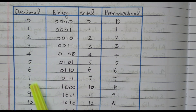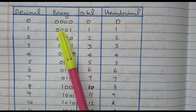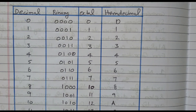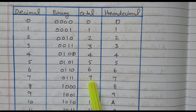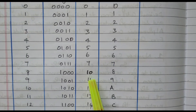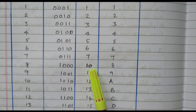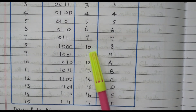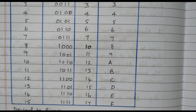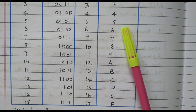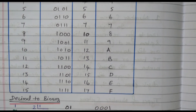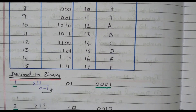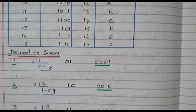The decimal goes from 0 to 15. For binary, we will see how to convert decimal to binary. In octal, the important thing is that up to 7 the digits are the same, then 8 and 9 are not available — it goes to 10, 11, 12, 13, 14, 17. In hexadecimal, up to 9 the digits are the same, then 6 alphabets follow. Now we will see how to convert decimal to binary.